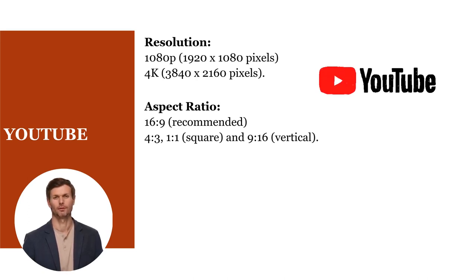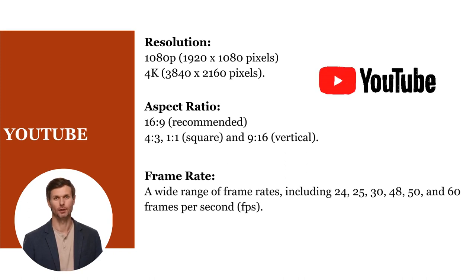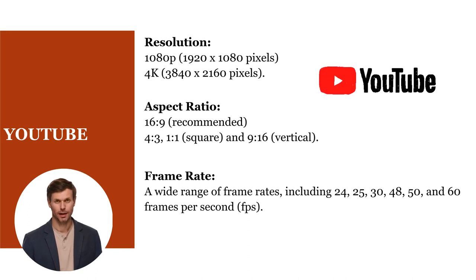Including 1:1 square and 9:16 vertical. YouTube supports a variety of frame rates including 24, 25, 30, 48, 50, and 60 frames per second. For most content, 30 frames per second is sufficient.